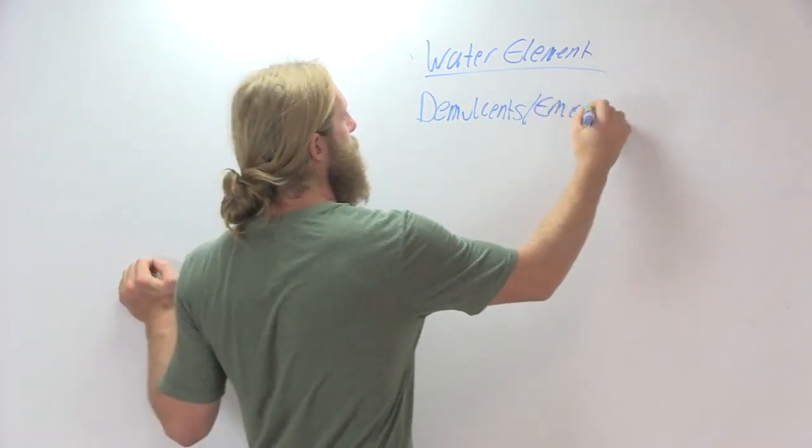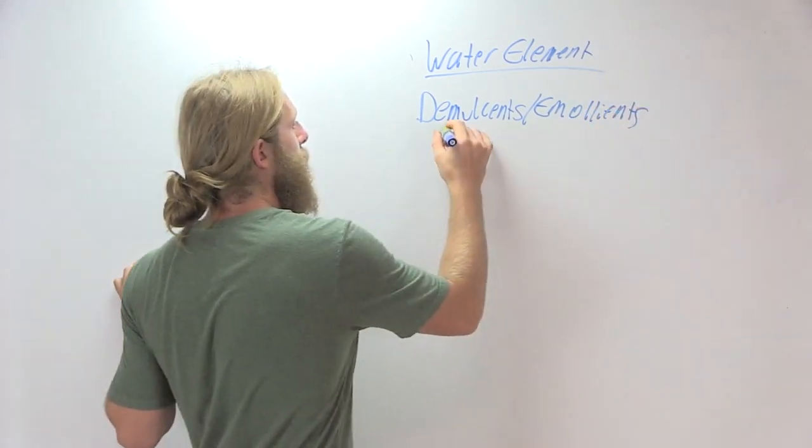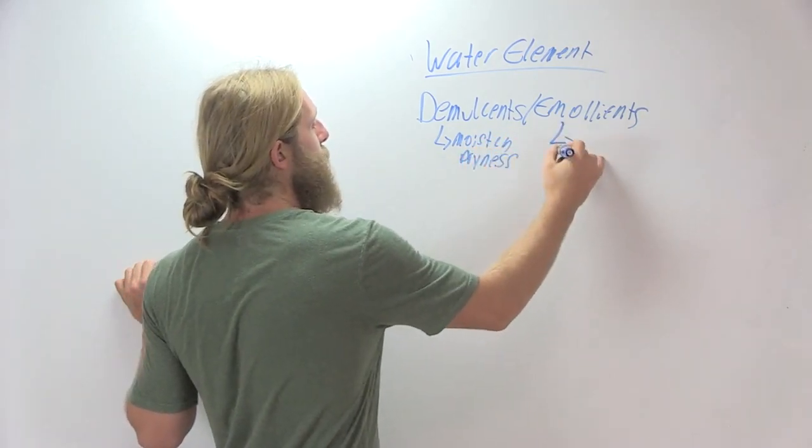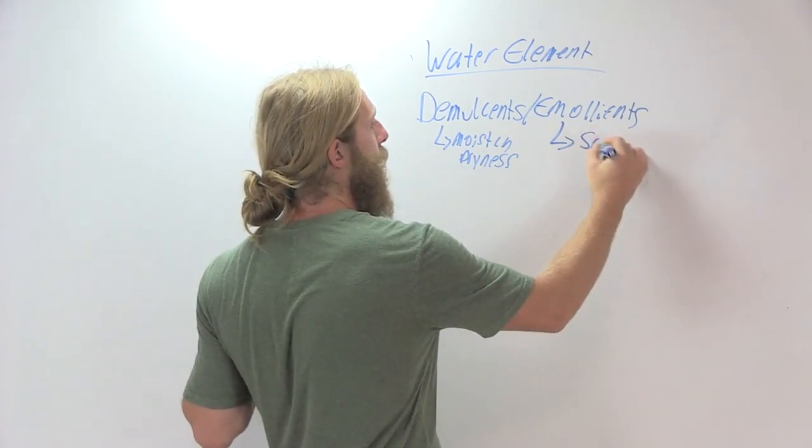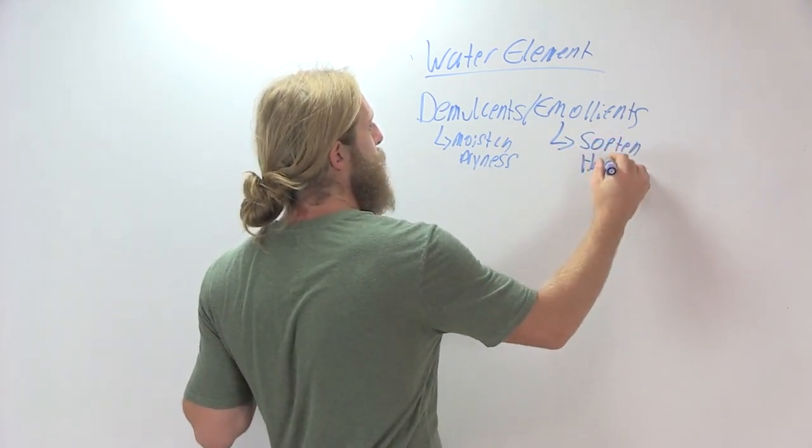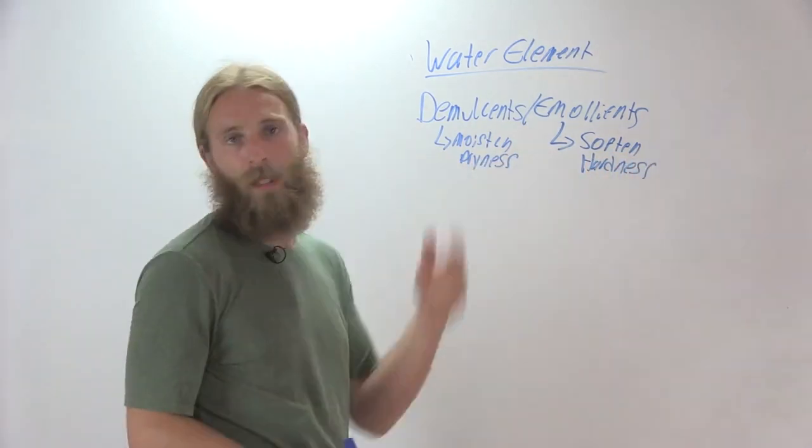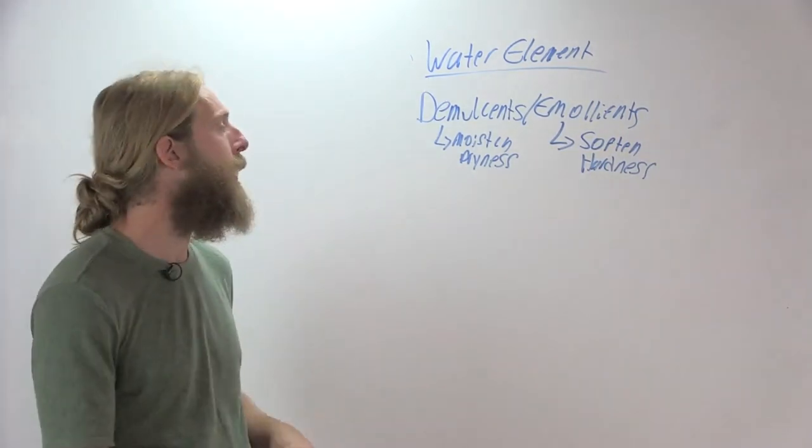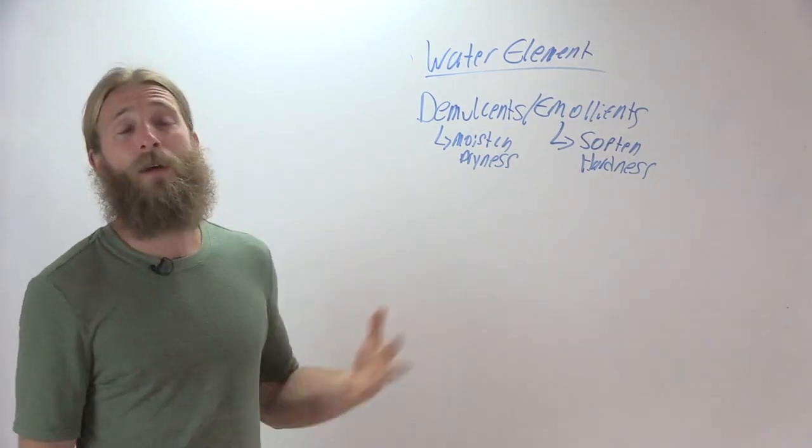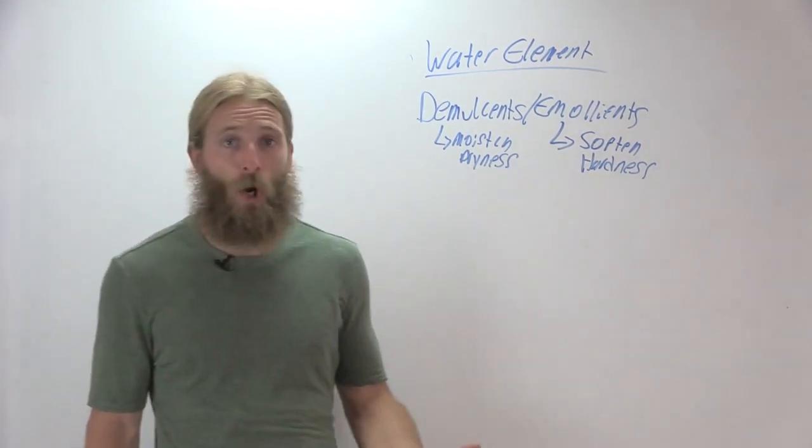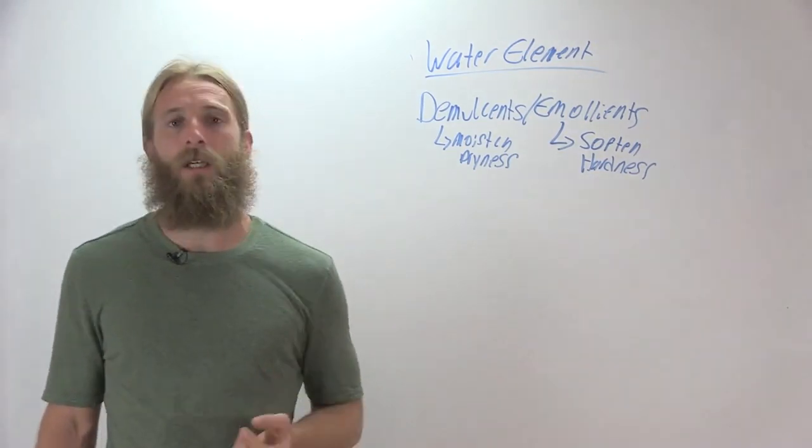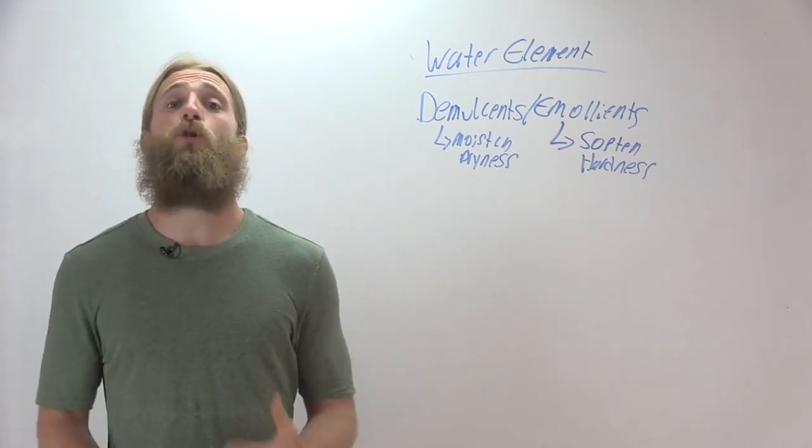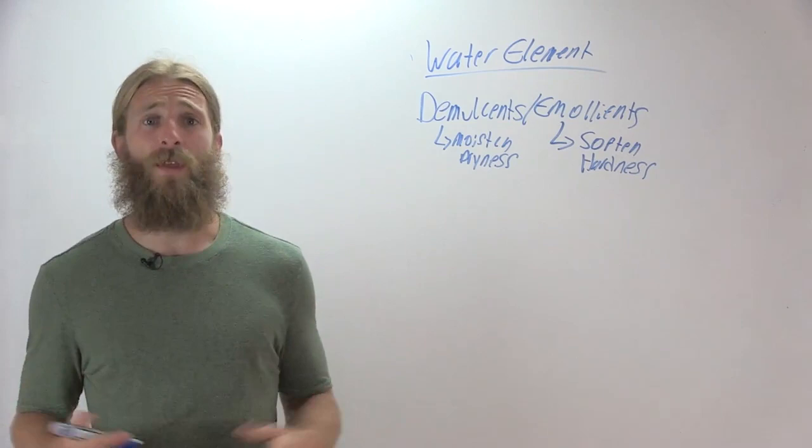But in general, what we're looking at here is a category of herbs we refer to as demulcents or emollients. And demulcents basically moisten dryness. And one thing that dryness ultimately leads to is hardness. So emollients soften hardness. And ultimately something that's demulcent is emollient and something that's emollient is demulcent. They're pretty much the same thing.